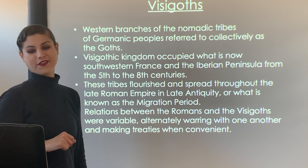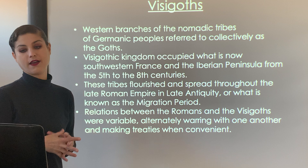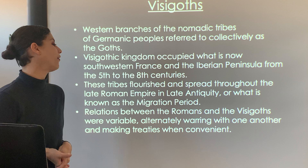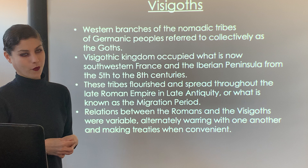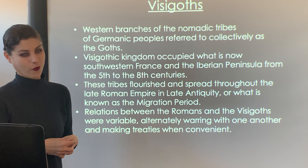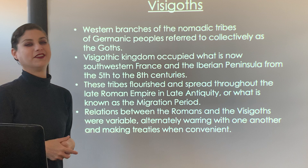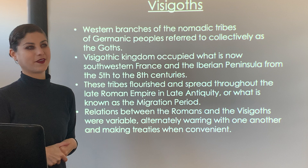The western branches of the nomadic tribes of the Germanic peoples are referred to collectively as the Goths. The Visigoth kingdom occupied what is now southwestern France and the Iberian Peninsula from the 5th to the 8th century. These tribes flourished and spread throughout the late Roman Empire in late antiquity, also known as the migration period. The relations between the Romans and the Visigoths were variable — alternately warring with one another and then making truces whenever it was convenient. Stories of war and peace have really been the same since the beginning of time.